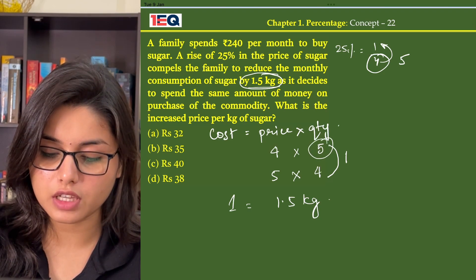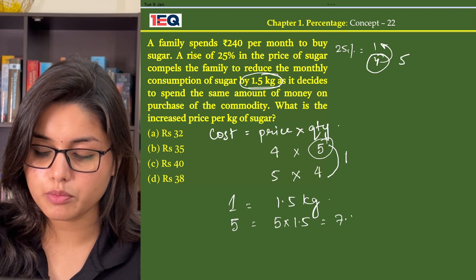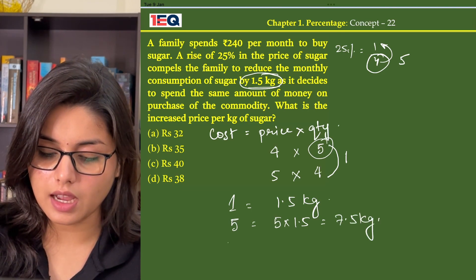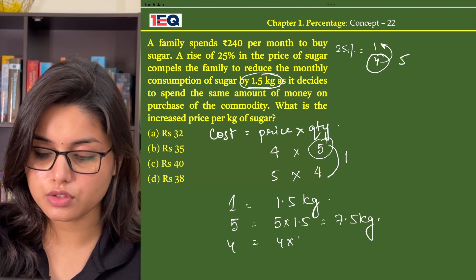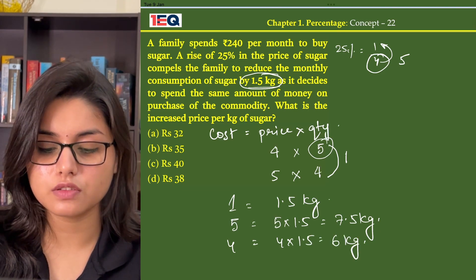Then what is the value of 5? 5 will be equal to 5 into 1.5, that is 7.5 kg. And 4 will be equal to 4 into 1.5, that is 6 kg.